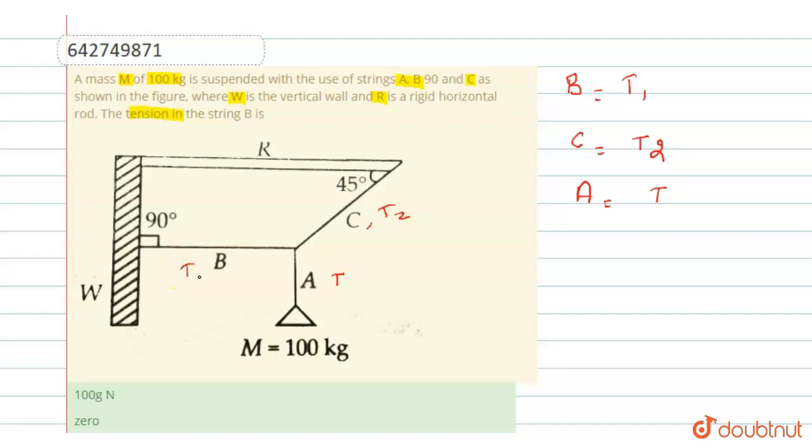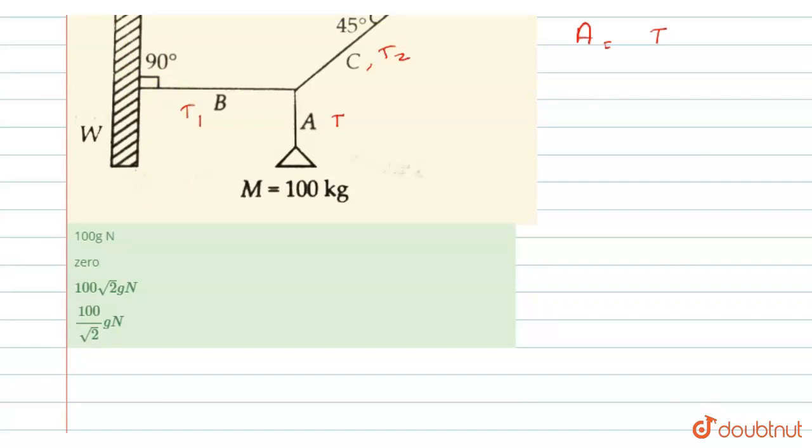tension in B is T1, right? So now if we look at the mass, the downward force acting is 100g and upward is tension T. For vertical equilibrium we can say T minus 100g equals 100 times acceleration. Acceleration is 0, so this is 0. So T equals 100g Newton. So tension T equals